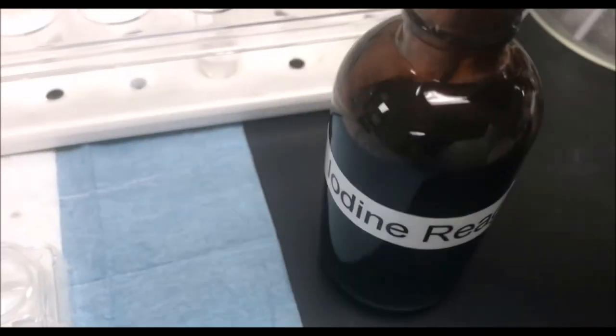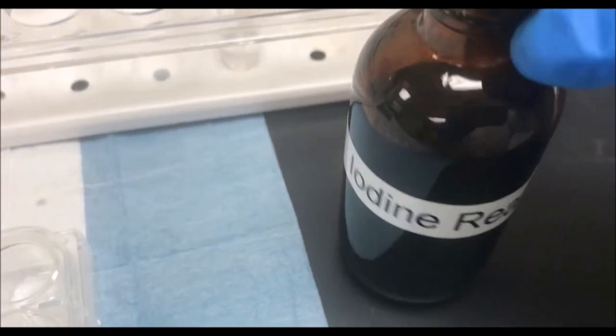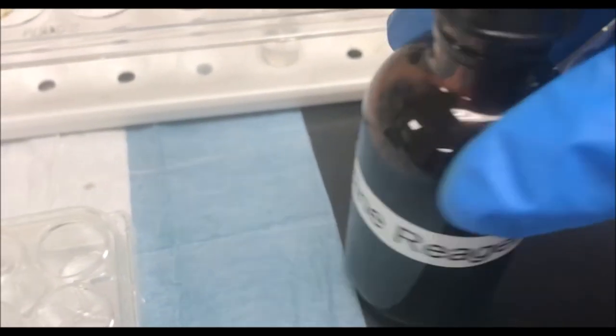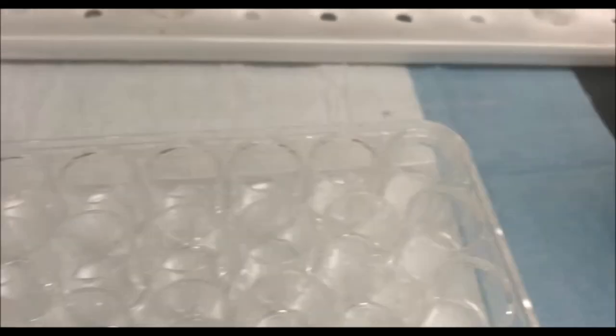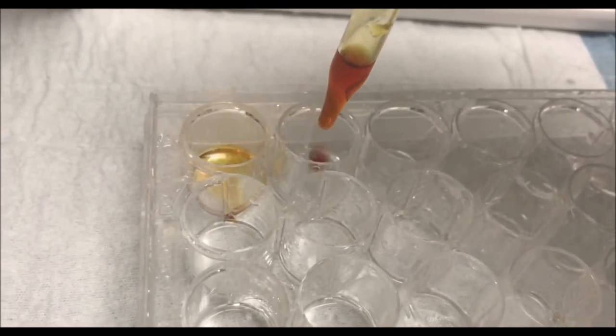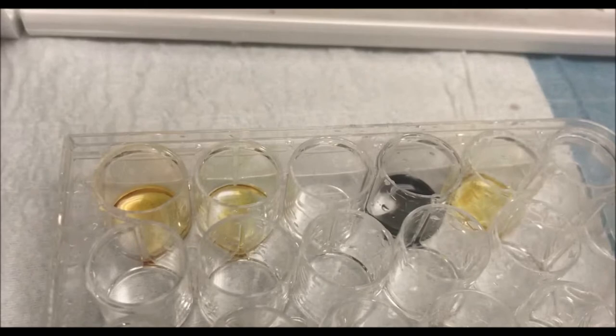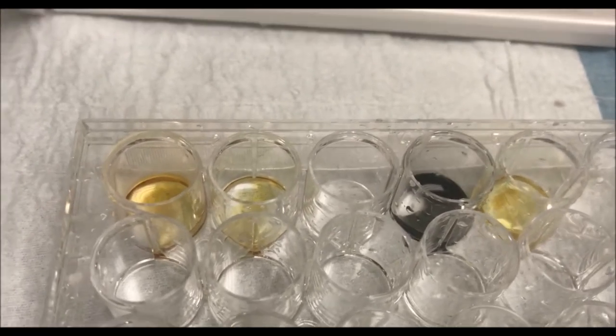After placing the samples into the spot plate, add 1 drop of iodine reagent to each. As you can see, only starch reacts with iodine to form a deep blue color.